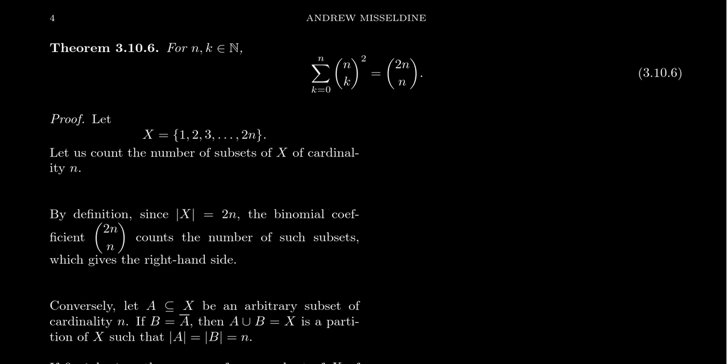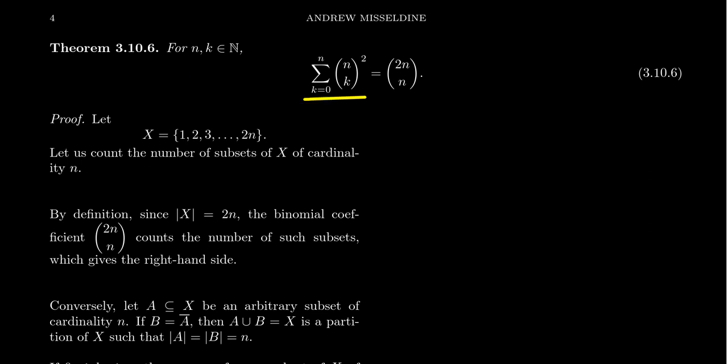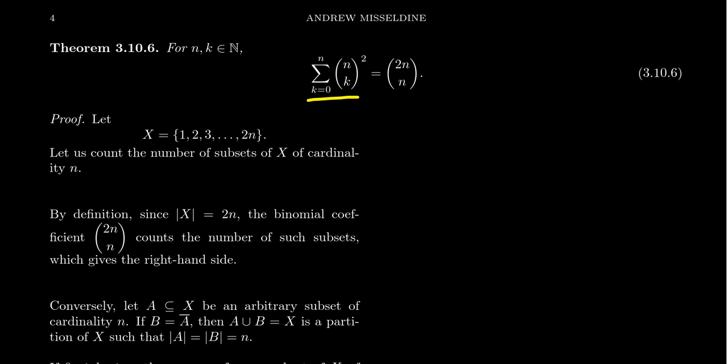I'm saving the best for last — best meaning mostly the complexity. This is going to be the most complicated formula of this video. Let's prove the identity that for any natural numbers n and k — and I should mention that if n is smaller than k, the associated binomial coefficients would be zero, so the formula is valid in those cases too. What we want to prove is that the sum as k ranges from zero to n of n choose k squared equals the binomial coefficient 2n choose n.